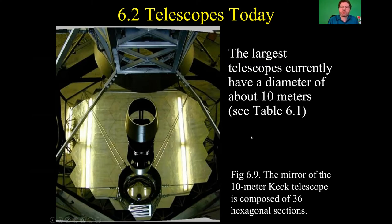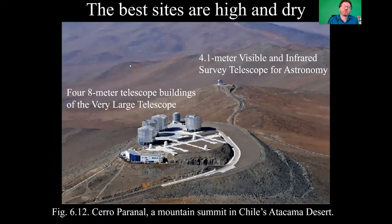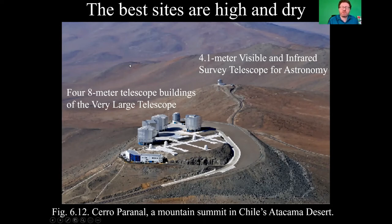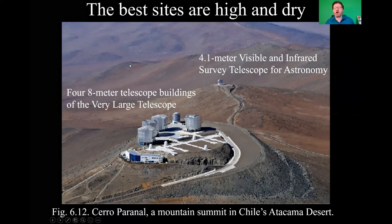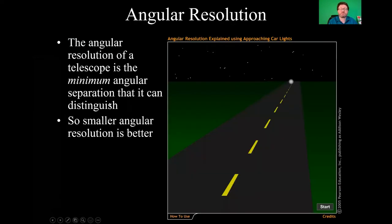So the largest telescopes currently have diameters of about 10 meters. There are plans to build larger ones, like the Extremely Large Telescope. Here's the 4-meter and 8-meter telescopes in Chile. It's good to put these kind of telescopes in areas that are high and dry. Why dry? You don't want clouds, obviously. Why high? Well, less atmospheric absorption of light. And so places like the Atacama Desert in Chile, mountaintop ranges in Hawaii, these are kind of ideal places to put telescopes.